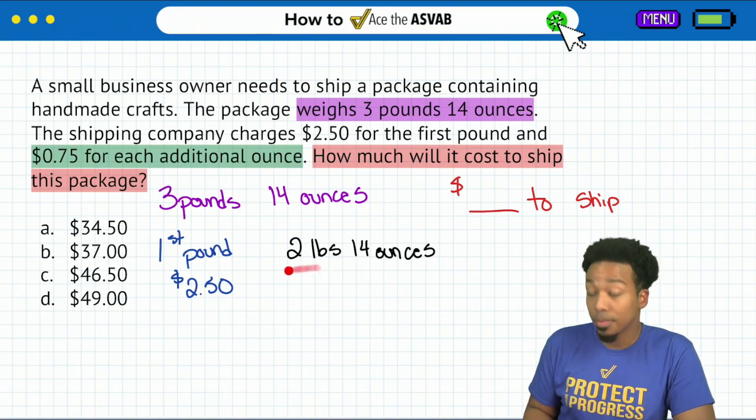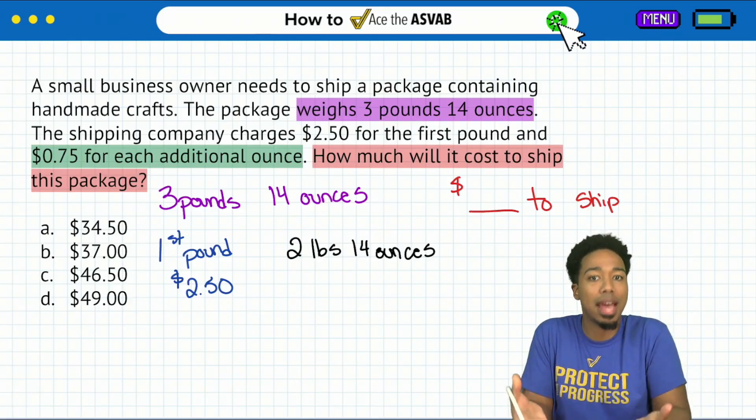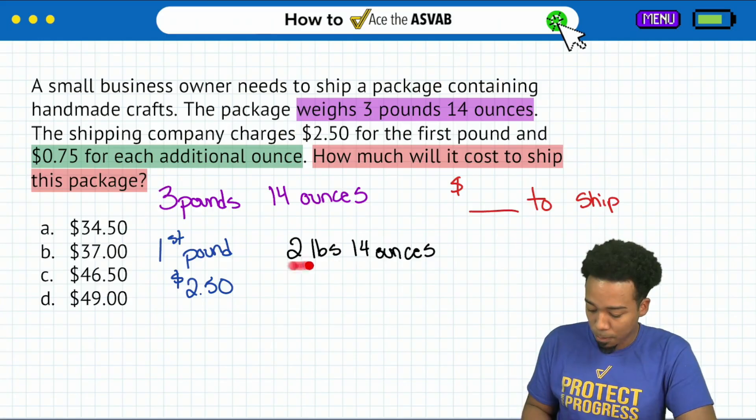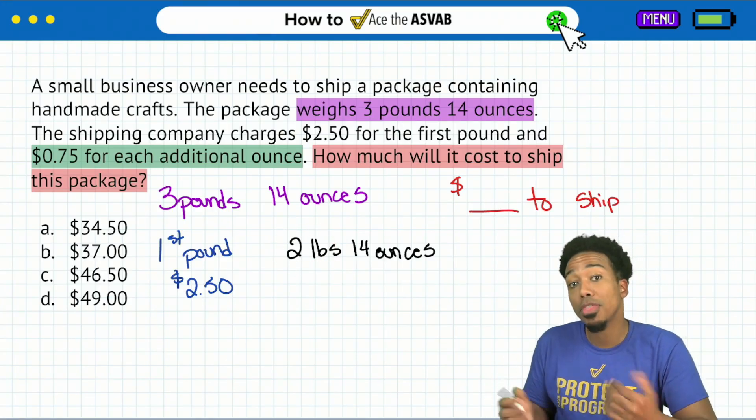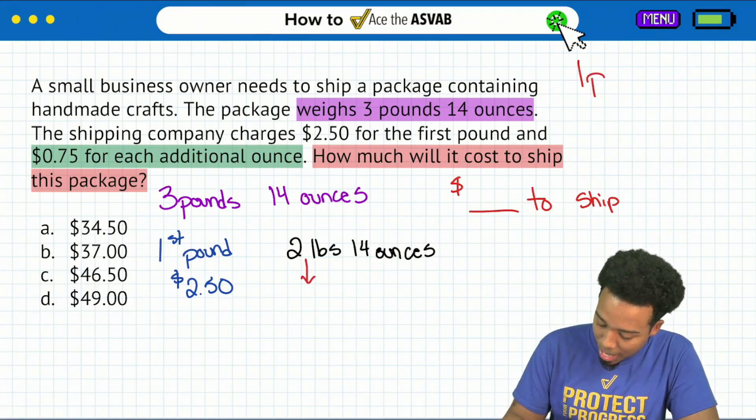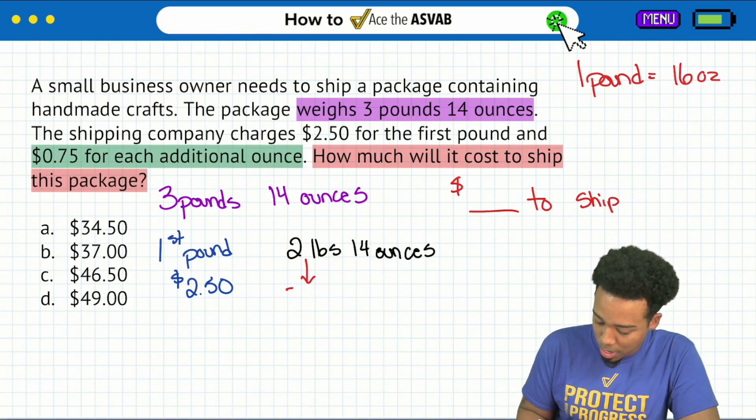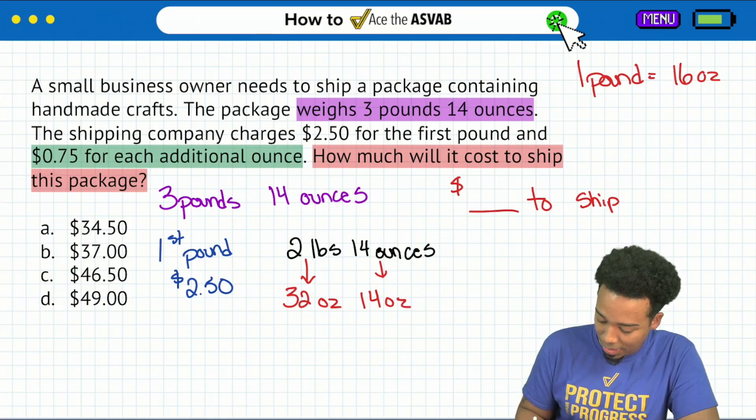I know on the surface it's pretty easy to say, okay, first pound is $2.50. So if we take away a pound, now we have 2 pounds 14 ounces left. That should be pretty clear there. But remember, we are being charged 75 cents for each additional ounce. So we need to turn that additional, that extra 2 pounds 14 ounces into just ounces, because that'll help us calculate that total. So let's go ahead and do that. How many ounces are in a pound? That's going to be 16. So each pound that we have, we can break it down into 16 ounces. So 2 pounds, that's 16 times 2, which would be 32 ounces.